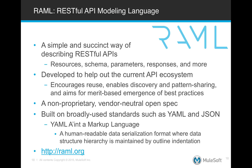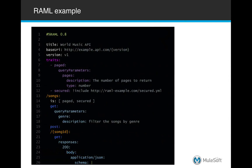You can get more information about the RAML project at raml.org, and later in this course we'll actually write some RAML to support an API. Here's a quick example snapshot — as you can see, it's quite a human-readable way of describing the API.